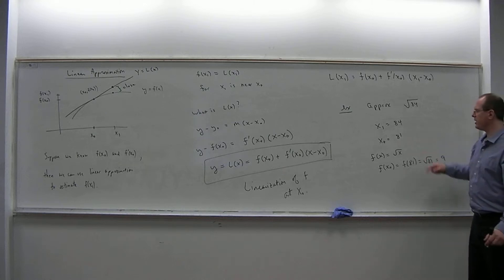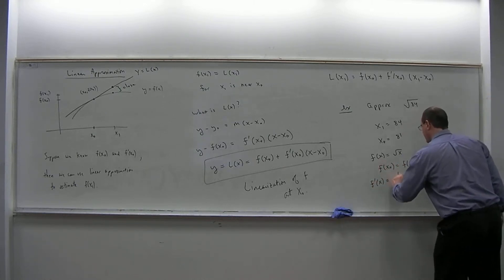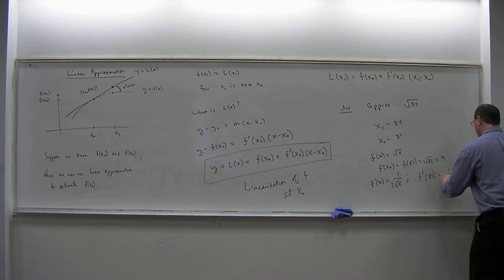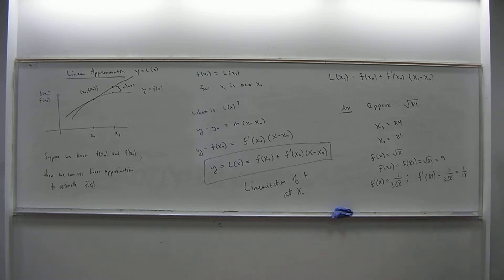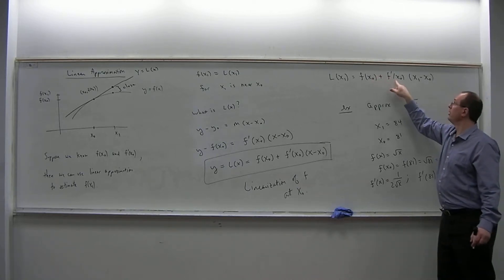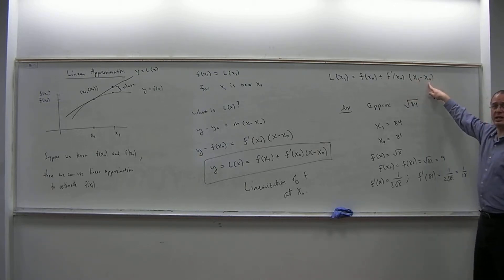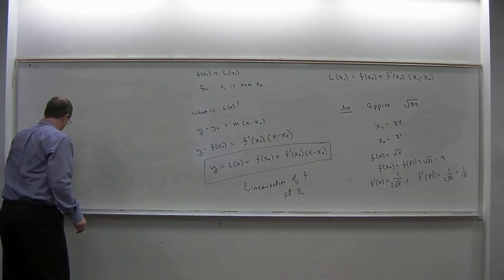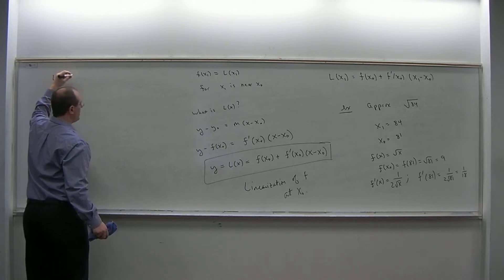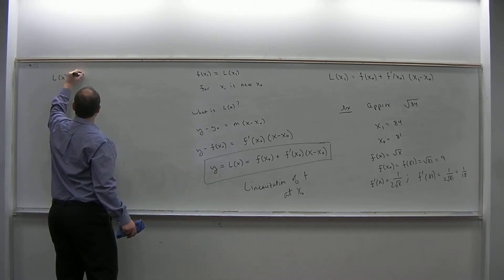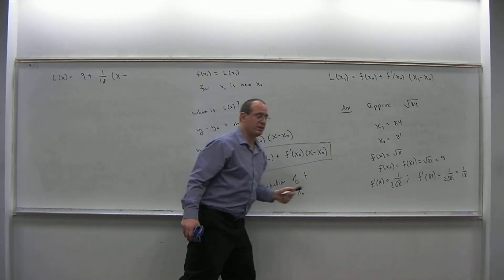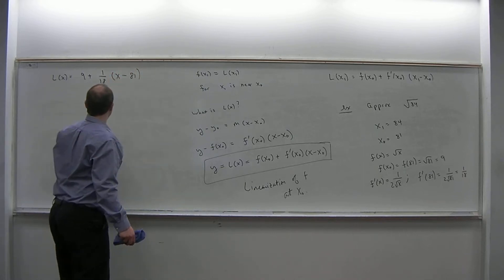What about the derivative? Can I plug 81 into the derivative? The derivative f prime of x is 1 over 2 root x. So f prime of 81 is 1 over 2 times the square root of 81, which is 1 over 18. So I know f of 81 equals 9, and I know f prime of 81 equals 1 over 18. The linearization formula is L of x equals f of x0, which is 9, plus f prime of x0, which is 1 over 18, times x minus x0, where x0 equals 81.